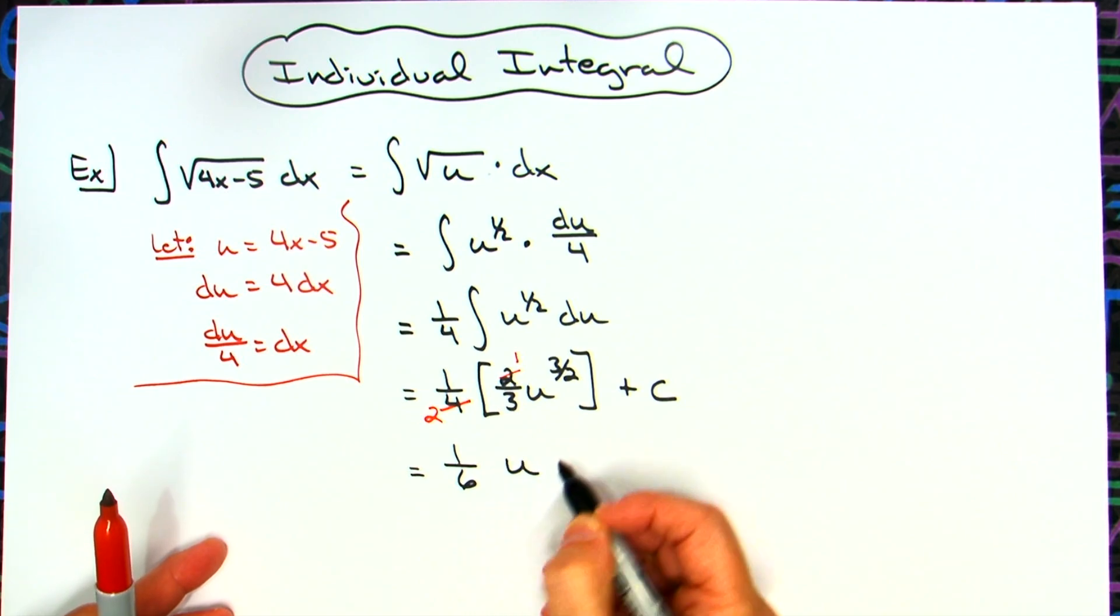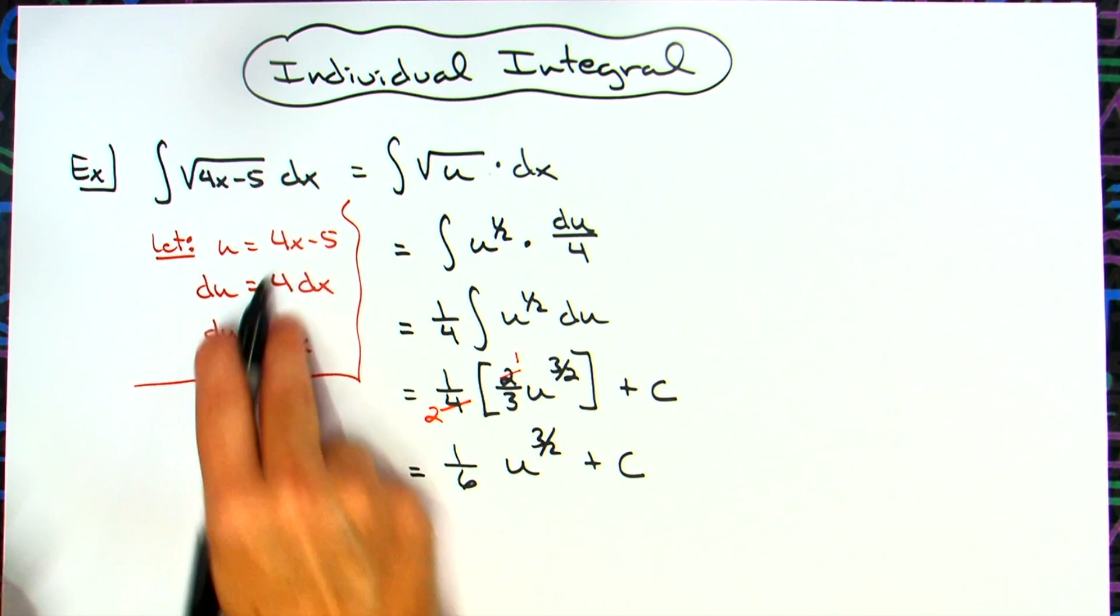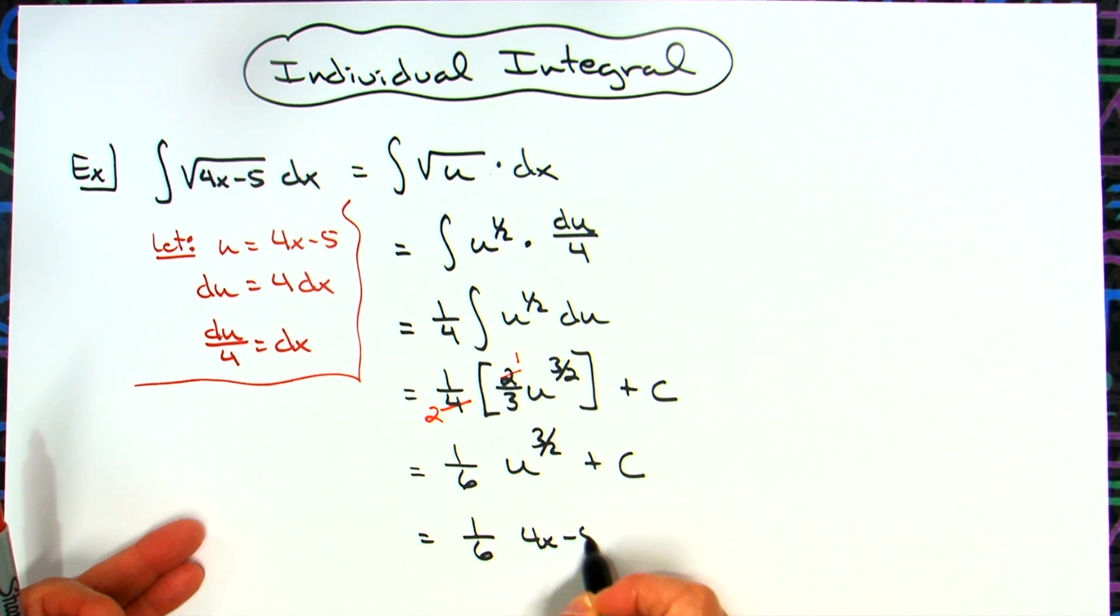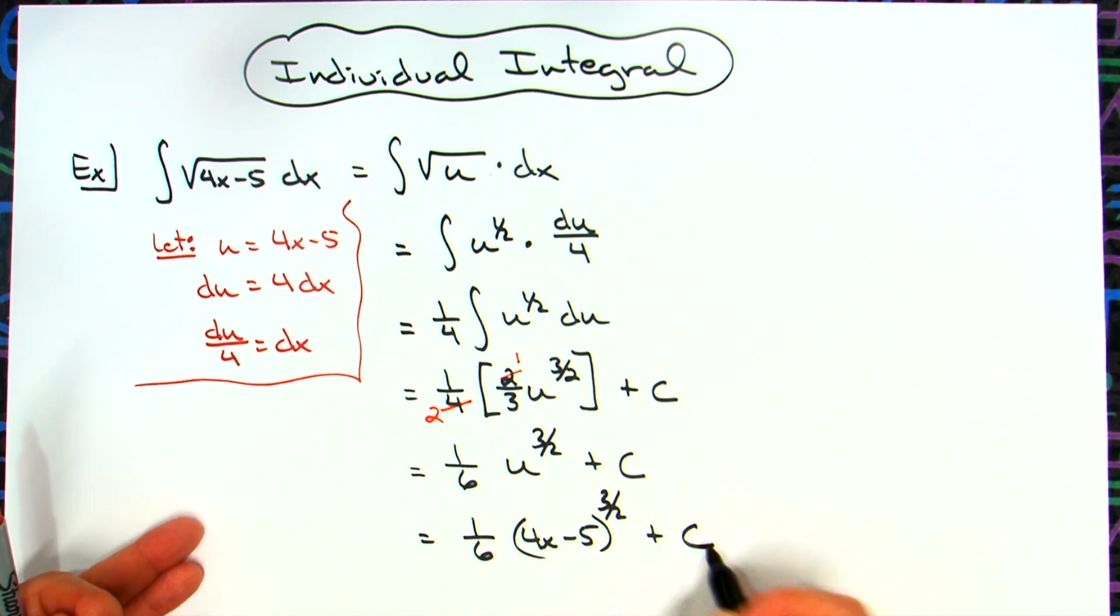We'll have u to the 3 halves plus c. The last step would be to take that u and put it back in. So then we'll have 1 sixth, 4x minus 5 raised to the 3 halves, and then plus c.